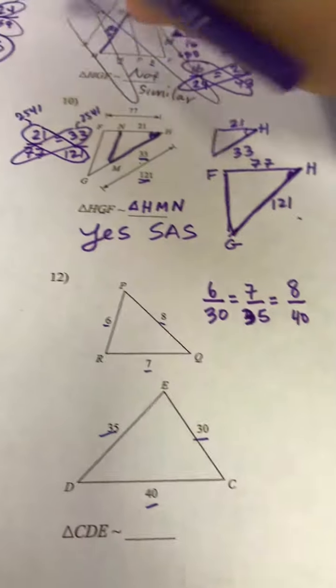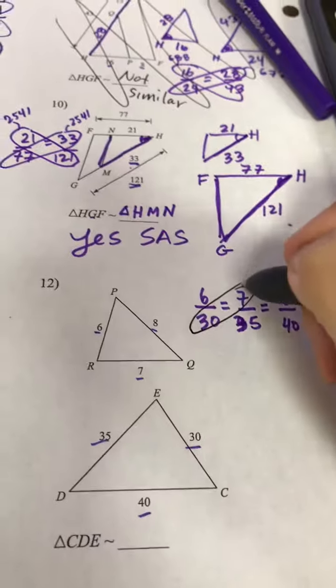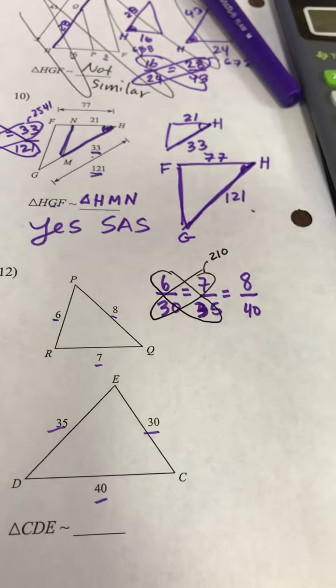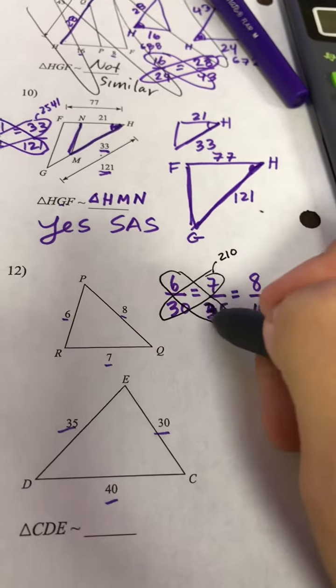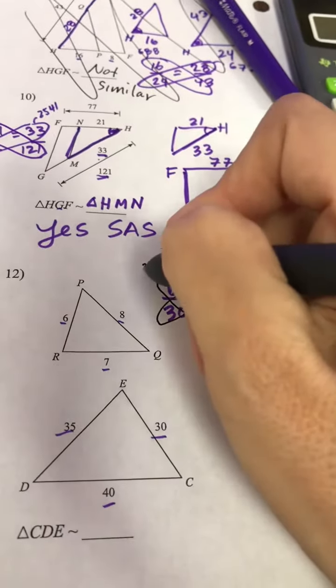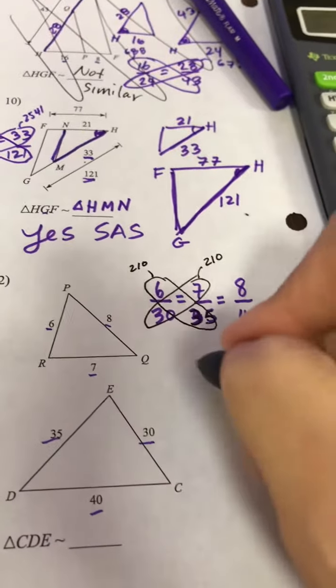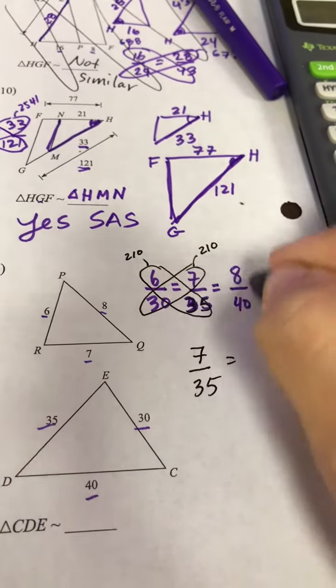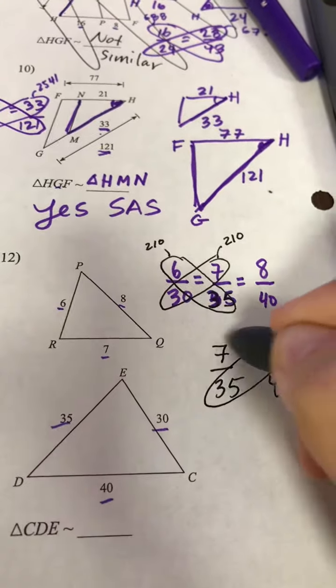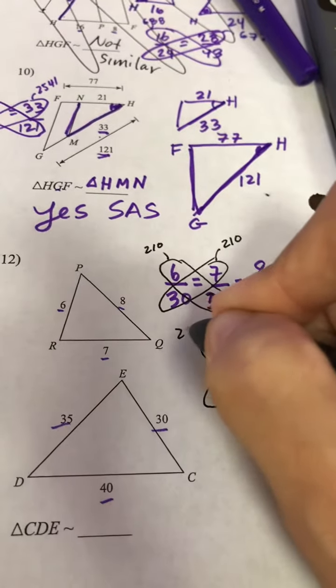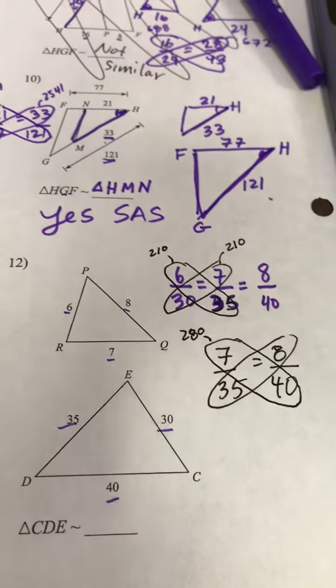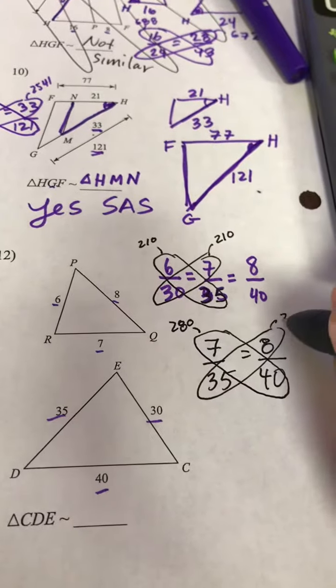Looking good. So when I take the cross product here, I get 210. Let's take the cross product here. 210. Now some people are struggling with this. You can rewrite if there's just too much going on. You can rewrite the other two ratios. And take the cross product. That would be 280. 280.